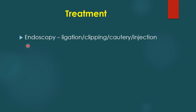The definitive treatment is endoscopy. These patients must be subjected to endoscopy, and management depends on the findings. Endoscopy not only diagnoses the condition, but also helps stop the bleeding through ligation, application of endoclips, cautery or heat probe to cauterize the bleeding vessels, or injection of adrenaline to cause vessel spasm and stop bleeding.